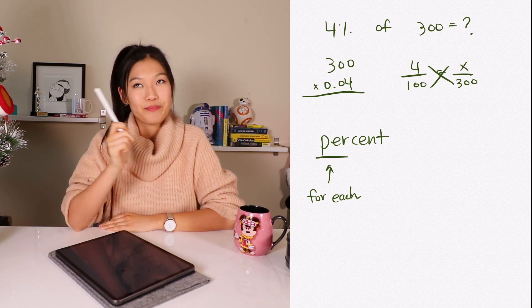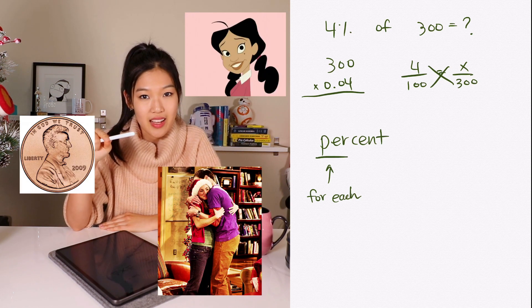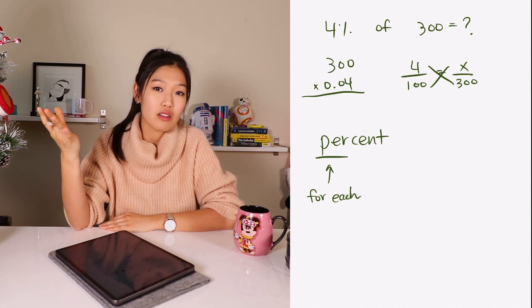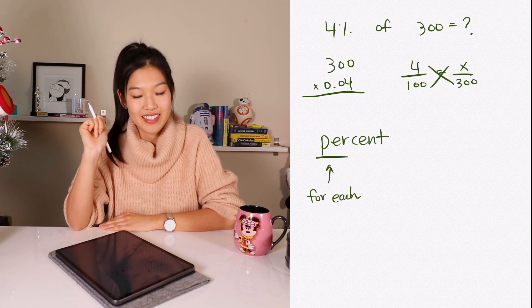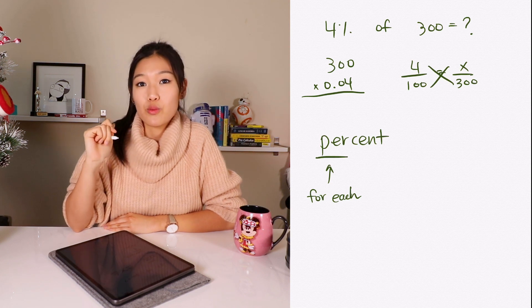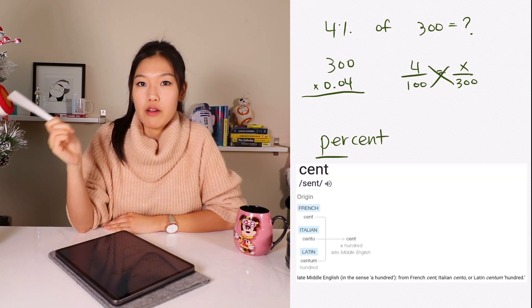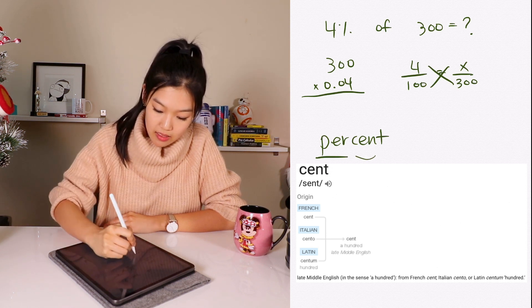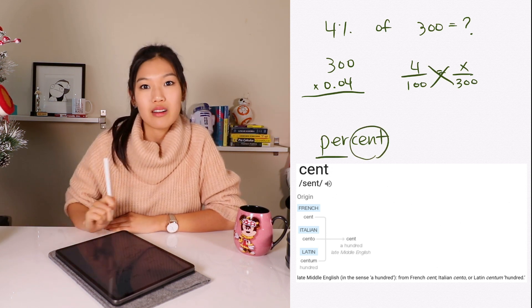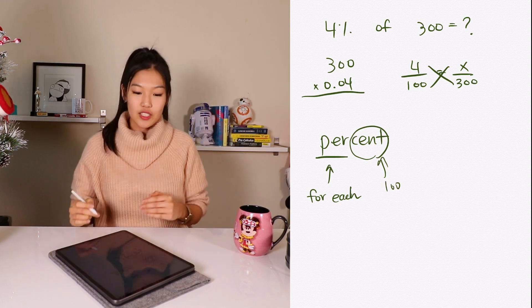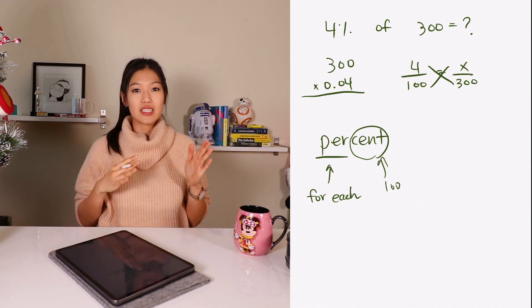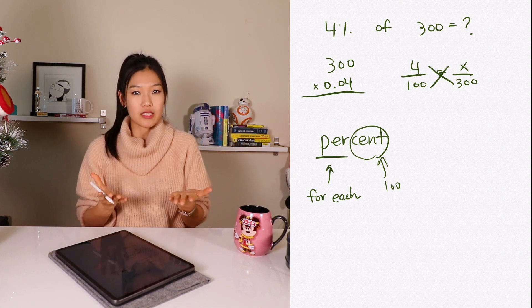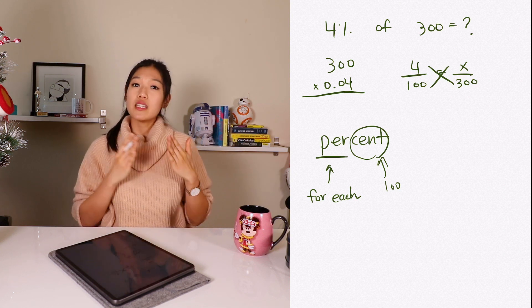What does 'cent' mean? How many pennies are in a dollar? 100. Exactly. 'Cent' is a really cool word — it originated from French, Italian, and Latin, and it literally means 100. So when I have the word 'percent,' it means 'for each 100.' So if I have four percent, I have four in each 100.